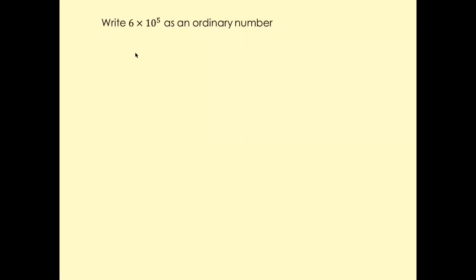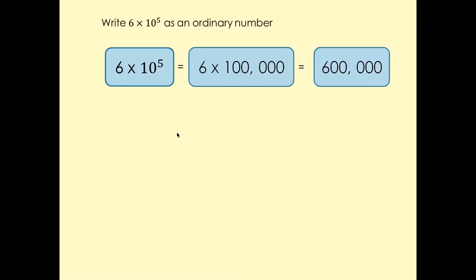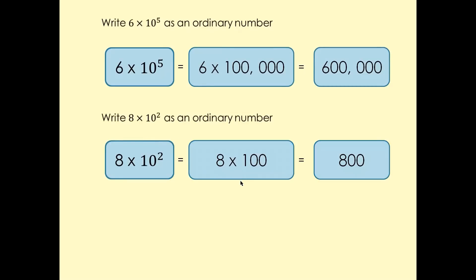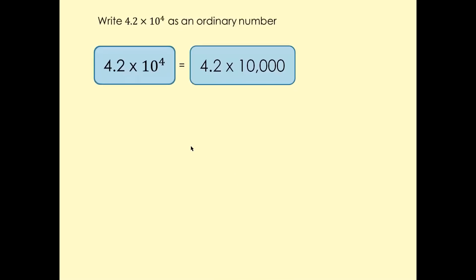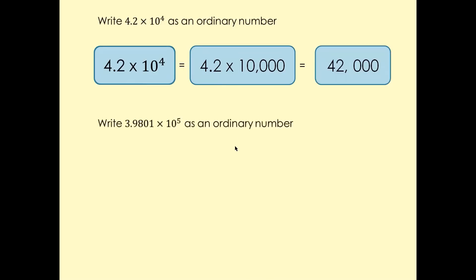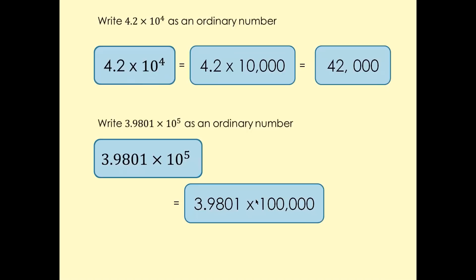In an exam they can also ask you to write the reverse answer — given a number in standard form, write it as an ordinary number. That's just the reverse of what we've discussed. So this one is straightforward: 600,000. This one times 10² is simply 800. When it's decimal, just move the decimal by as many places as indicated — here 4 places gives 42,000. And this one multiplied by 100,000 gives 398,010.